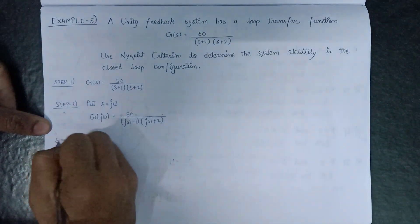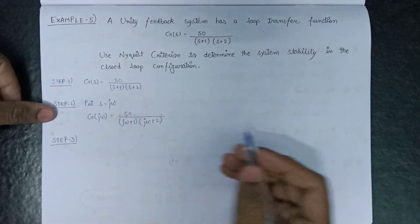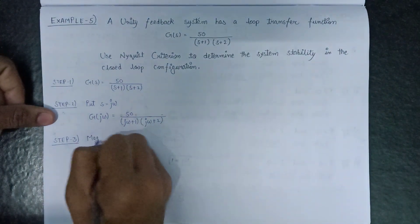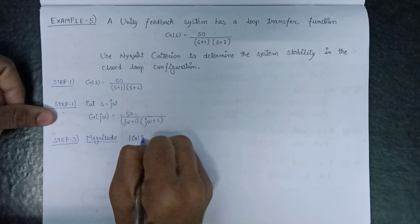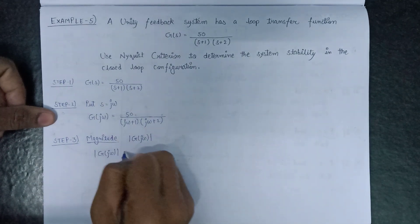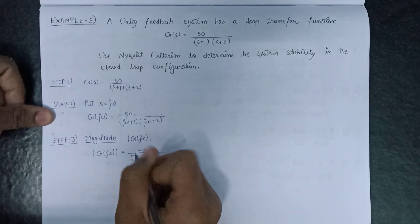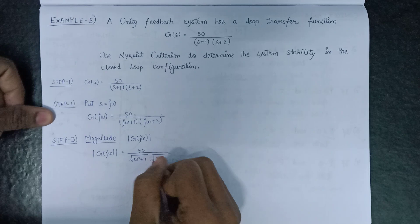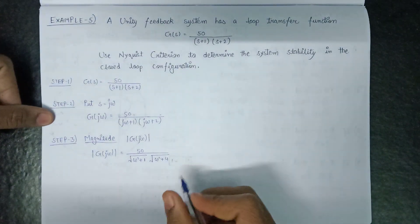After this we move on to step number 3: polar plot representation. First we have to calculate the magnitude and phase angle. The magnitude, represented as |G(jω)|, equals 50 over √(ω²+1) times √(ω²+4). This is the value of the magnitude.